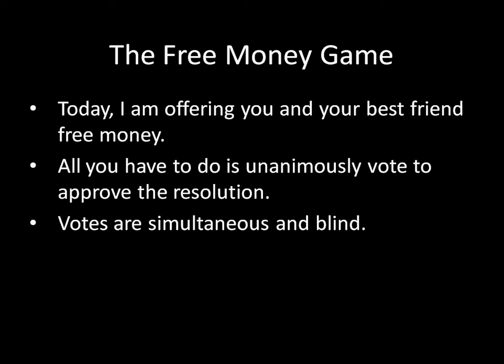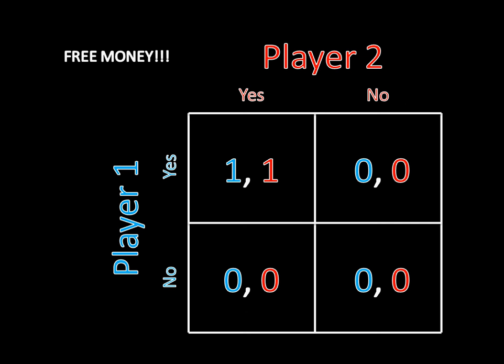You might think that the only equilibrium is for both of you to say yes. But as you'll see, there's actually an equilibrium where you don't get the free money. The free money game just looks like this: each player can vote yes or no. As long as both vote yes, you both get a dollar; if anyone votes no, no one gets anything. Yes-yes is a pure strategy Nash equilibrium, because both players are getting something and can't profitably deviate to voting no — that would mean going from one to zero.